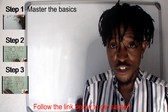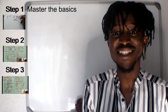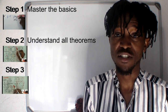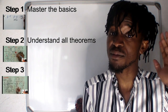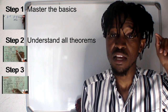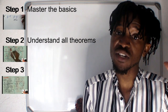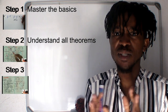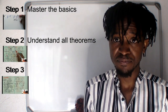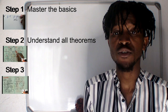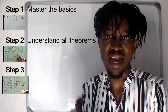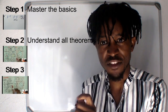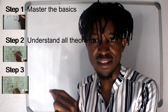Step number two: make sure that we understand the theorems in Euclidean geometry — from circle centre theorems, to cyclic quadrilateral theorems, to tangent theorems and proportionality theorems if you're in Grade 12. We need to understand those. What I mean by that is: understand the theorem. We are going to demonstrate this.